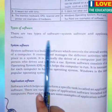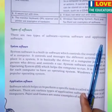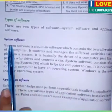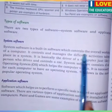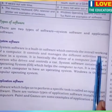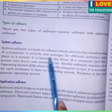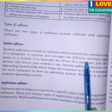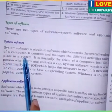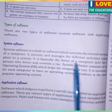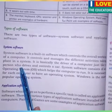There are two types of software: system software and application software. System software is a built-in software which controls the overall working of a computer. It controls and manages the different activities taking place in a system. It is basically the driver of the computer, just like a person who drives and controls a car.